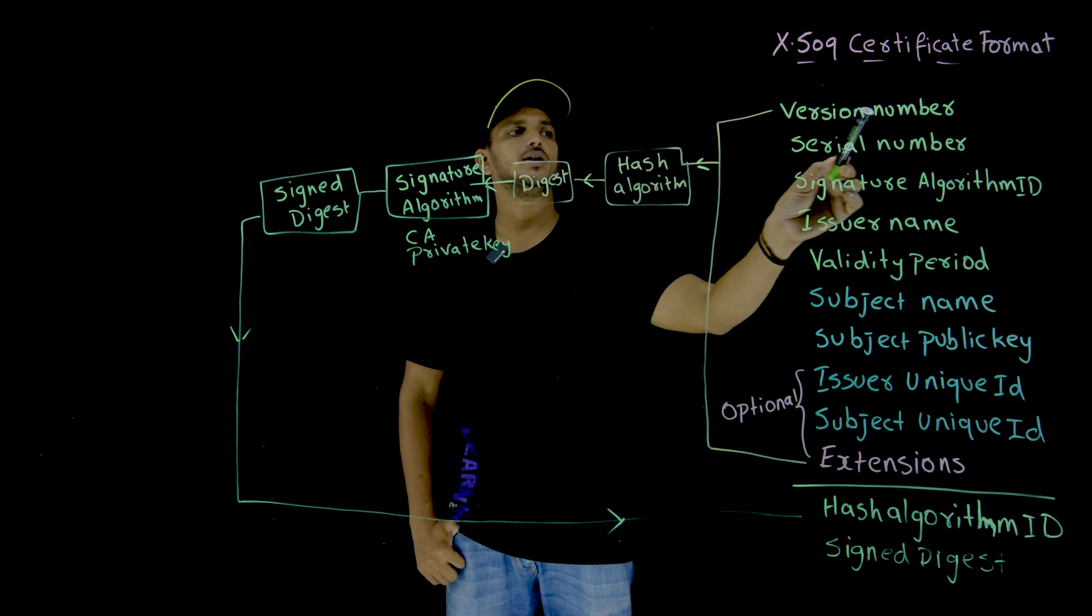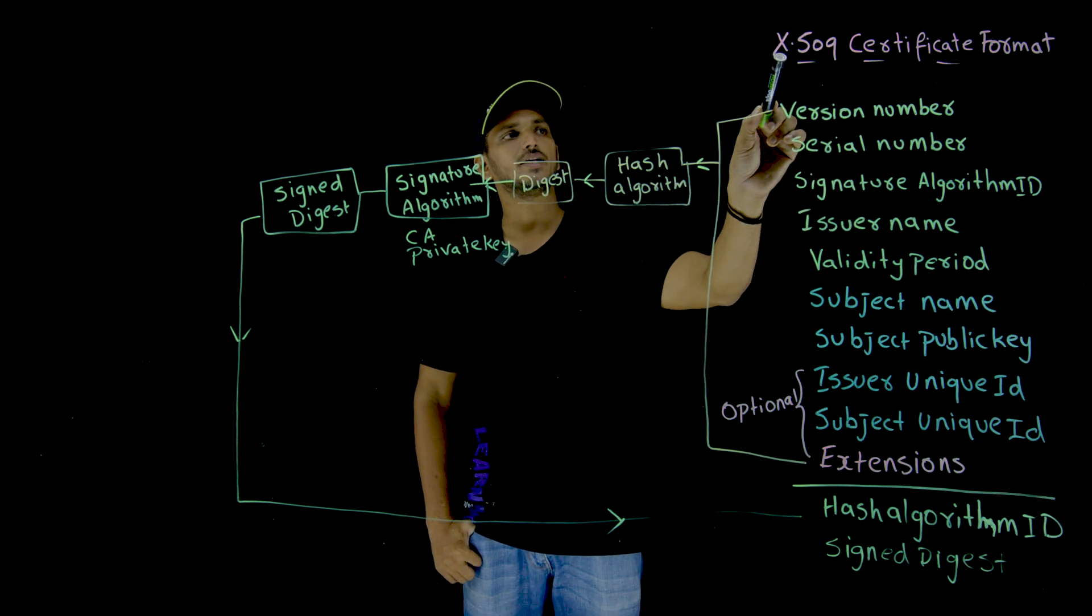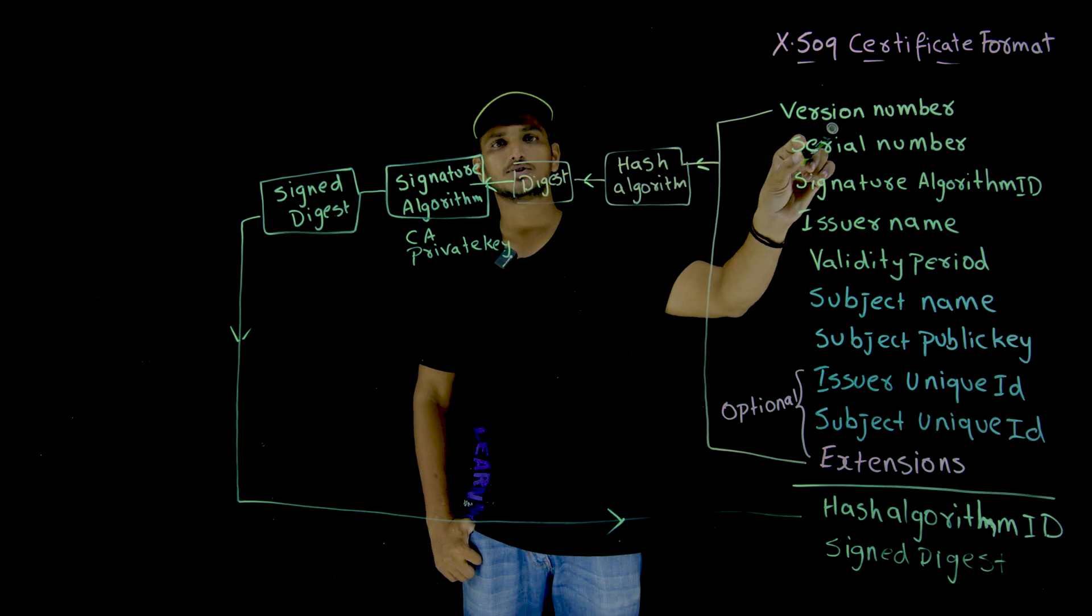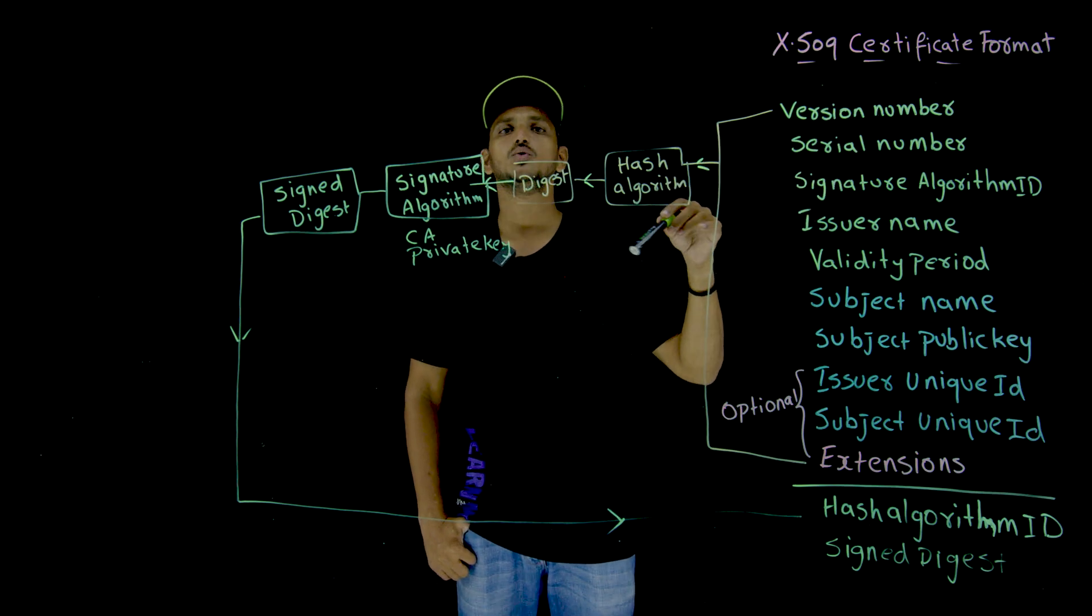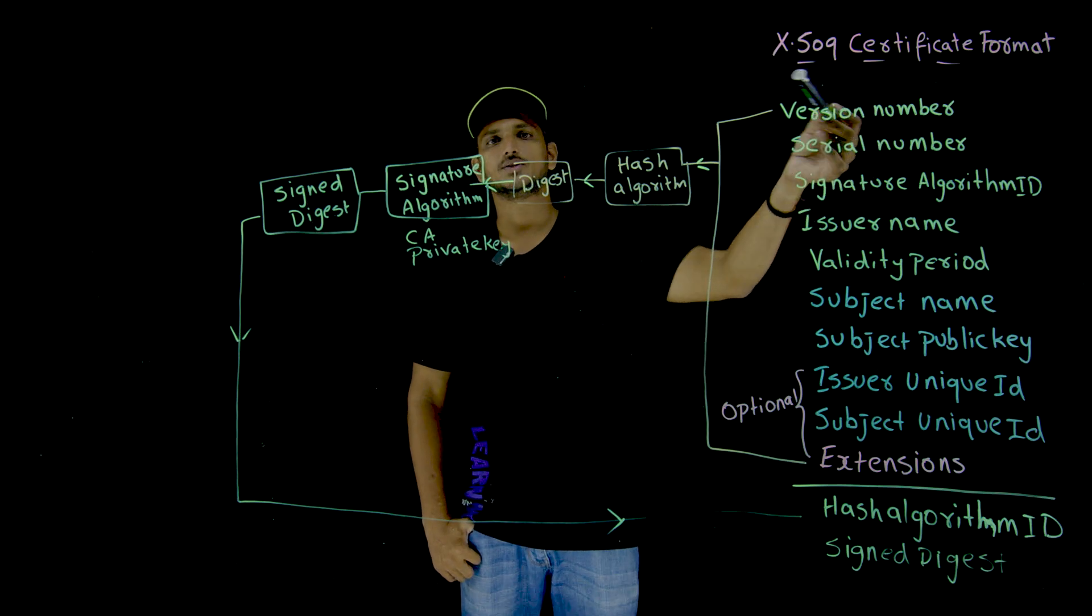So first thing is version number, means digital certificate X509 certificate version number, which version it is going to use, version 1, version 2, version 3 like that, certificate format versions.